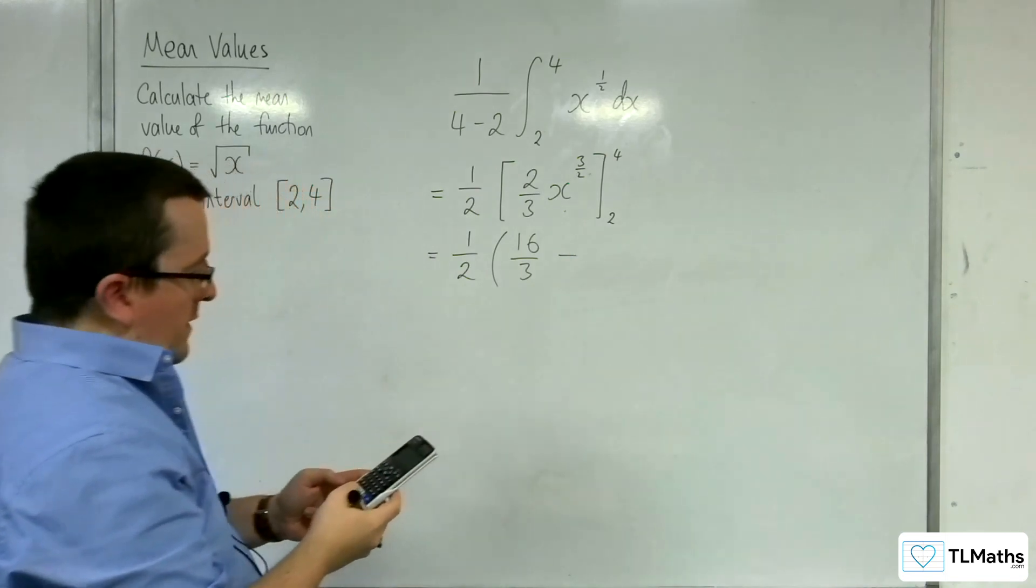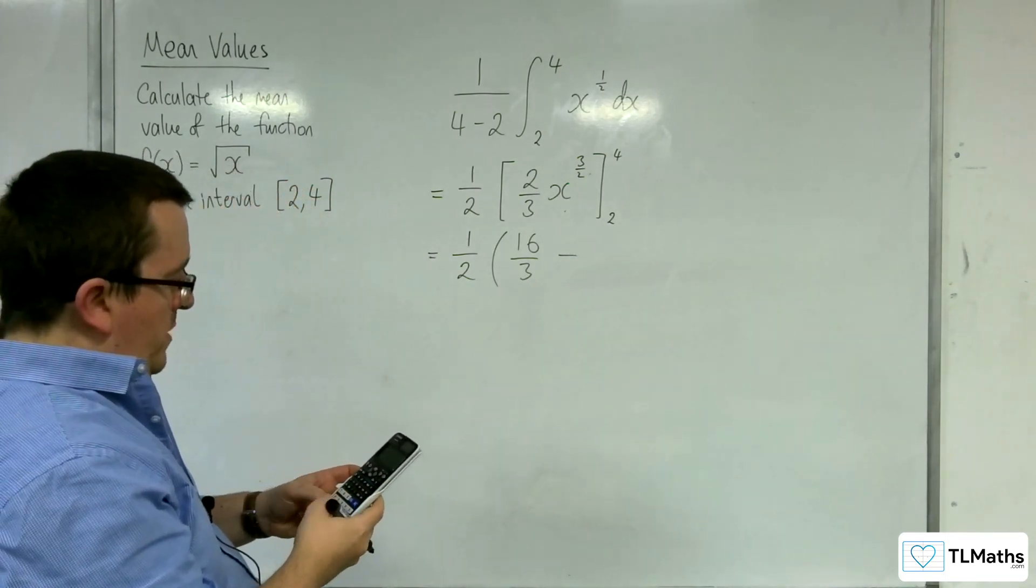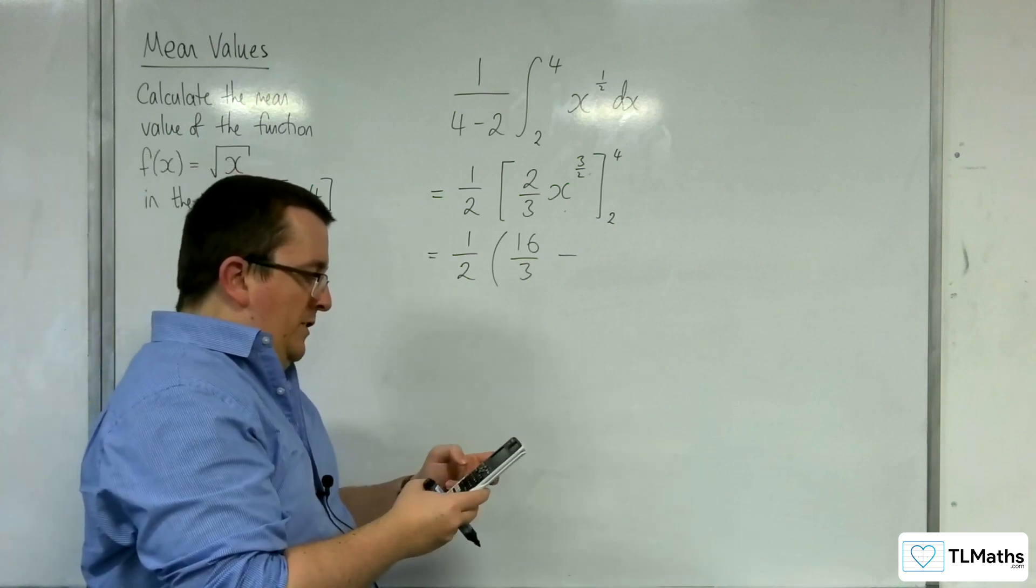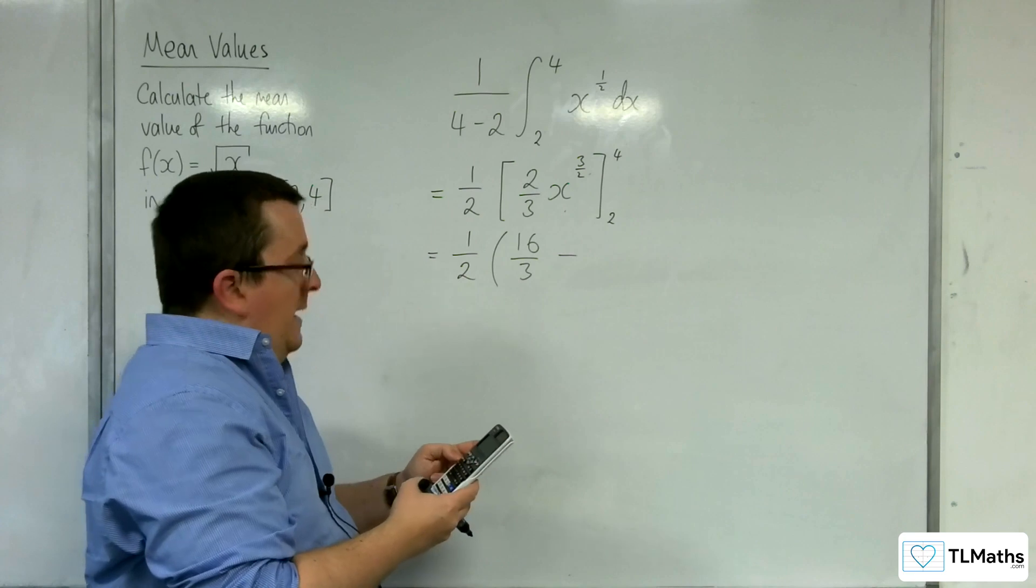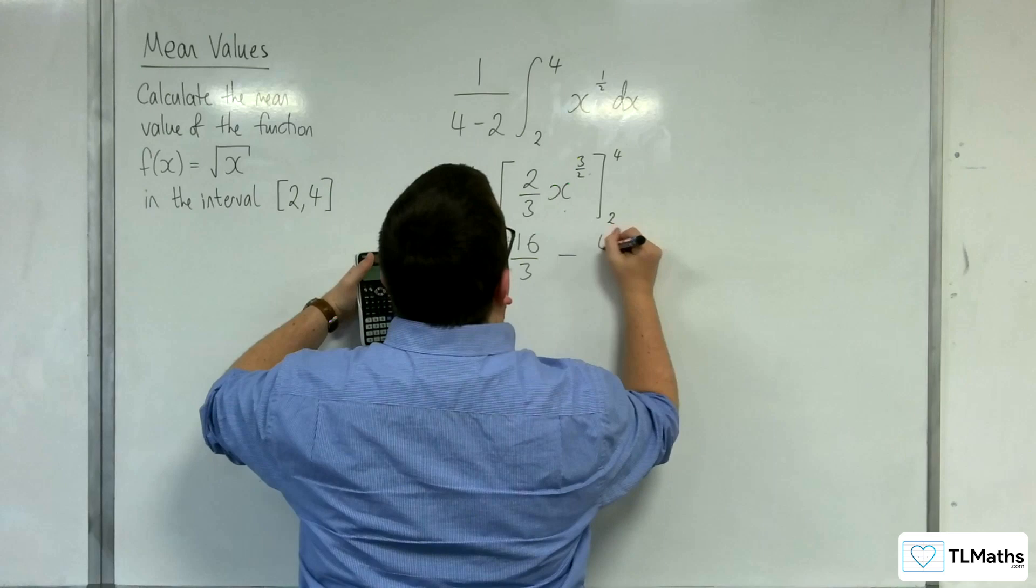And then substitute in the 2. So 2 to the power of 3 halves. So square root of 2 and then cube it. 2 root 2 and then times by 2 thirds. So 4 root 2 over 3.